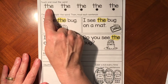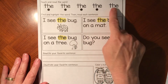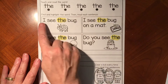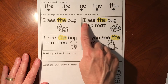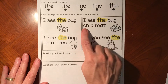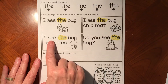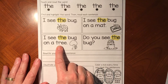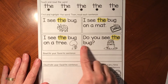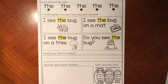Okie dokie, here we go. The, the, the, the, the. I see the bug. I see the bug on a mat. I see the bug on a tree. Do you see the bug? Hear how my voice went up because I was asking a question. That was my third read, so I'm going to circle my third time.